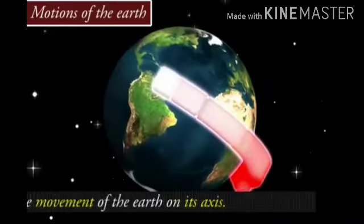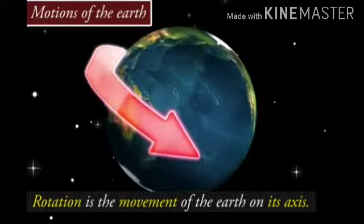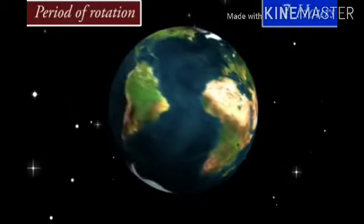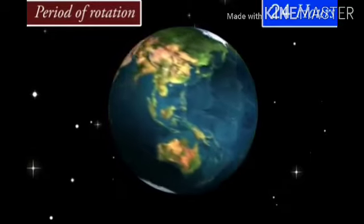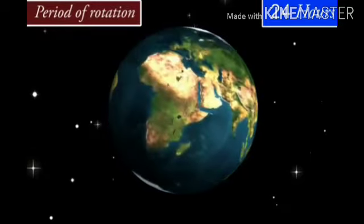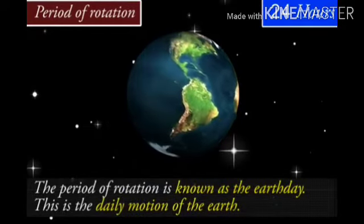Earth rotation is the movement of the earth on its axis. The earth takes about 24 hours to complete one rotation around its axis. The period of rotation is known as the earth day. This is the daily motion of the earth.